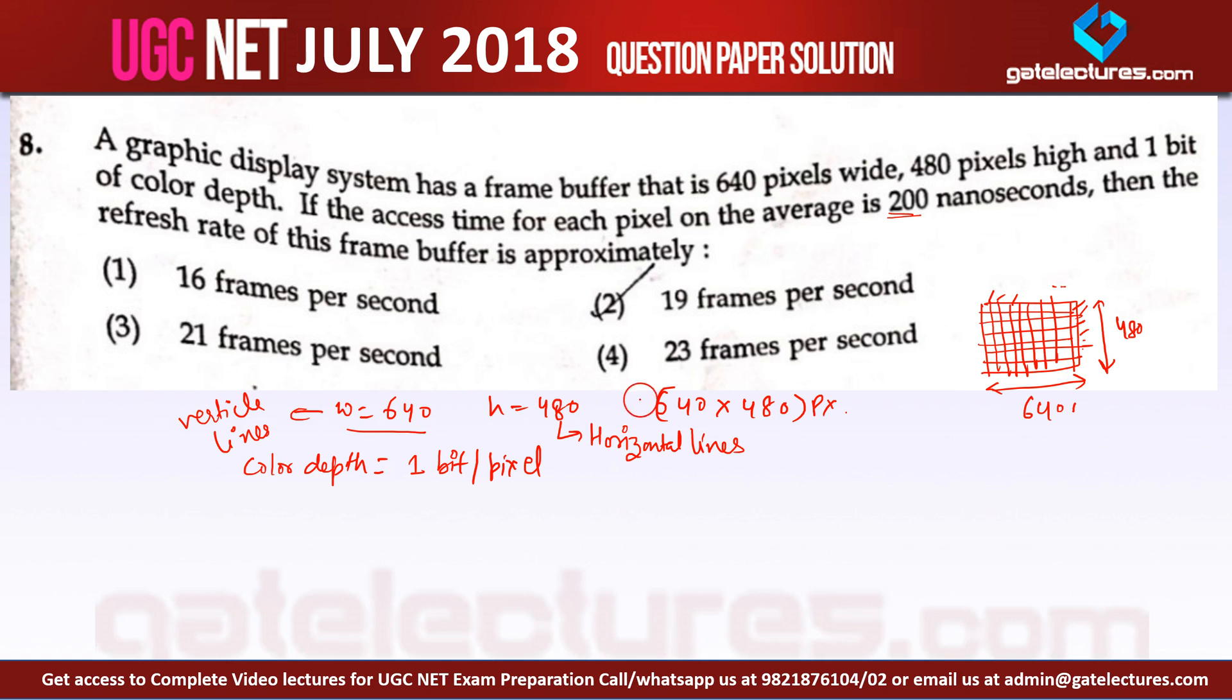Therefore the total pixel here is around 640 multiplied by 480. Now the memory required, when I am saying memory required for the total pixel, is 640 × 480 × 1 bit. Because for every pixel we are storing 1 bit of information. So remember it is bit, it is not bytes.